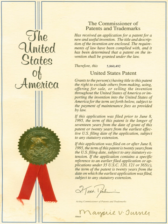In most countries, both natural persons and corporate entities may apply for a patent. In the United States, however, only the inventors may apply for a patent, although it may be assigned to a corporate entity subsequently, and inventors may be required to assign inventions to their employers under an employment contract. In most European countries, ownership of an invention may pass from the inventor to their employer by rule of law if the invention was made in the course of the inventor's normal or specifically assigned employment duties, or if the inventor had a special obligation to further the interests of the employer's company.